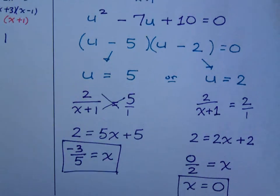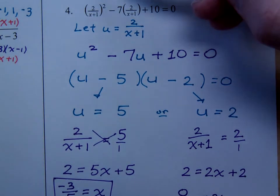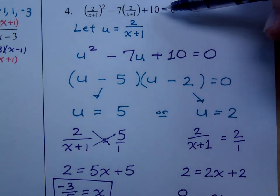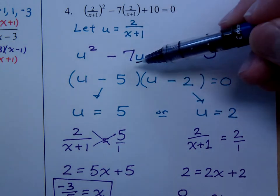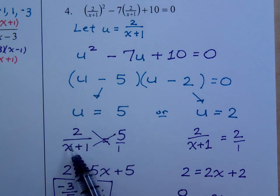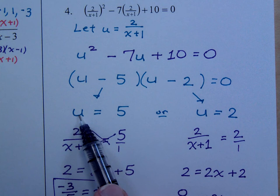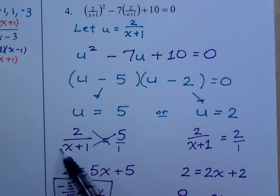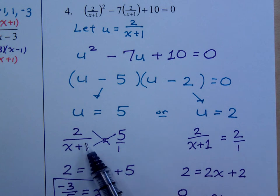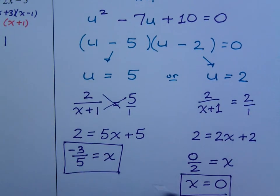In this last problem, we made a little substitution. When I made the substitution, it took this ugly looking equation and it made it something that was easy to work with. We were able to factor it, set each factor equal to 0. Then we did the substitution going backwards. Instead of writing u, I write what it represented which was 2 over x plus 1. These smaller equations I could then solve to get my answers negative 3 fifths and 0.